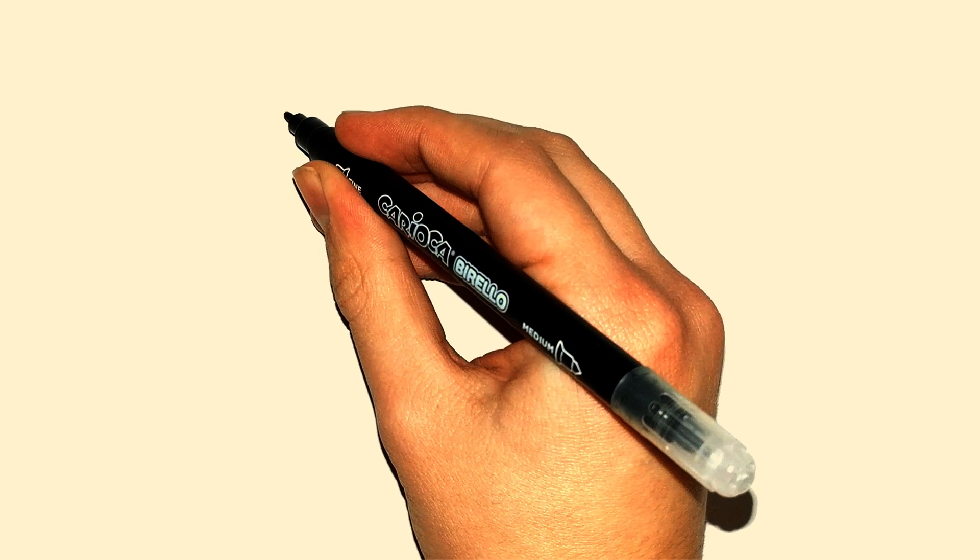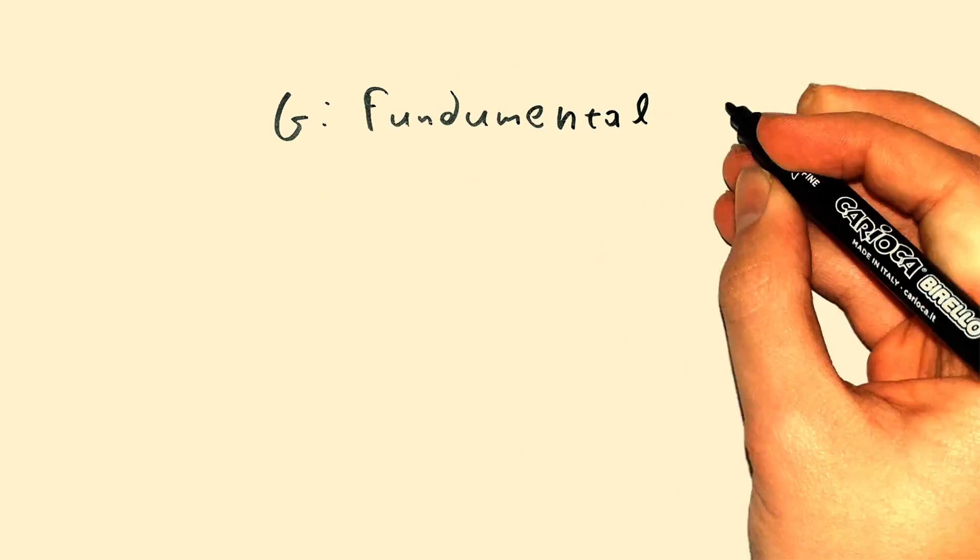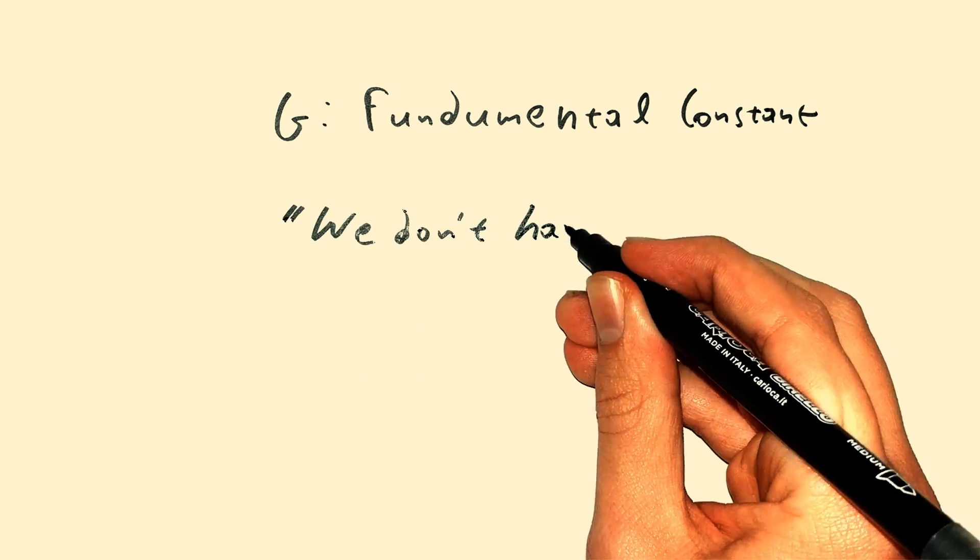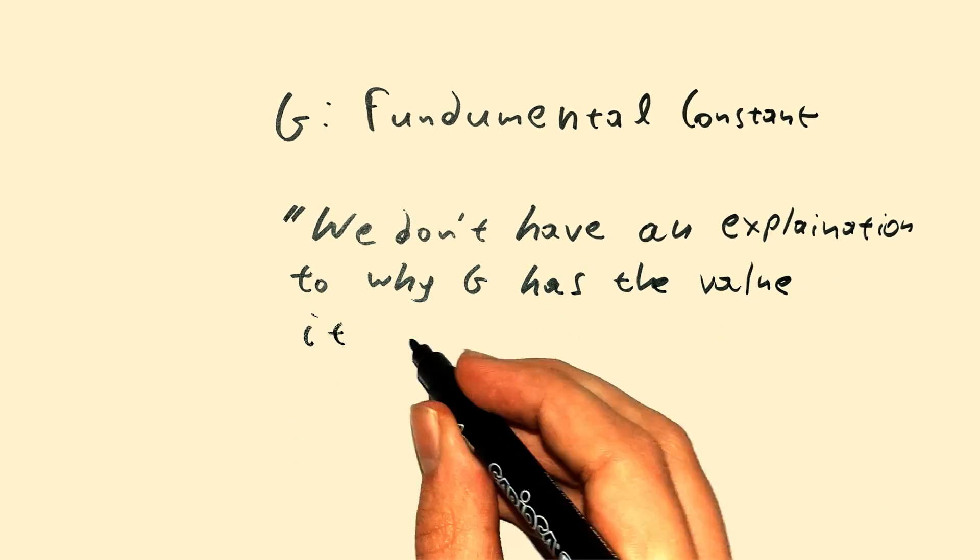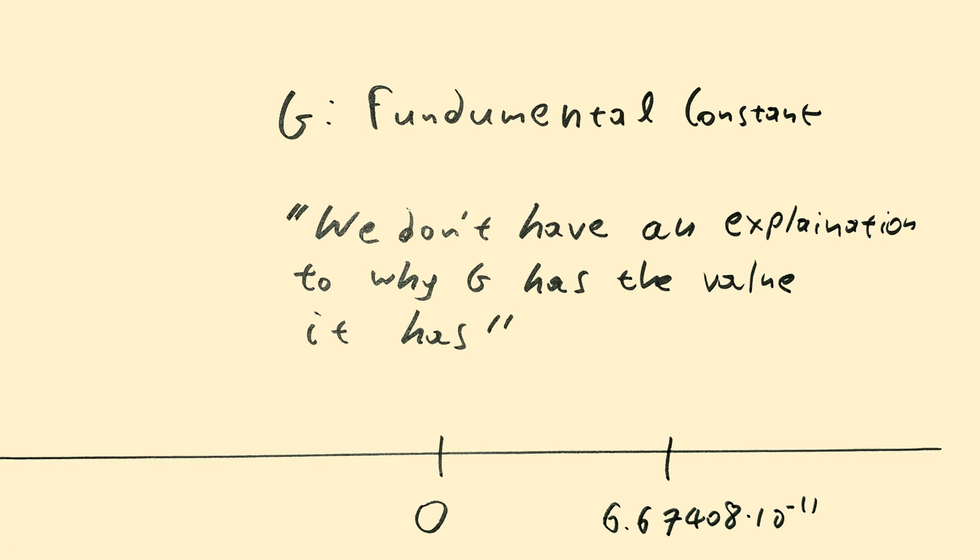And I saved the best for last. G is classified as a fundamental constant. This is the scientific way of saying we don't have an explanation to why G has the value it has. We found it experimentally, but we can't give any reason why it has that value and not any other value in the real number line. That's what we call a fundamental constant.